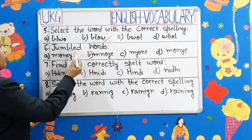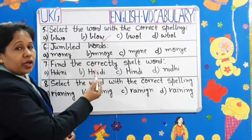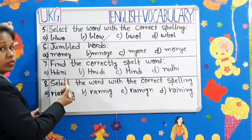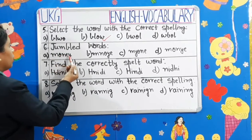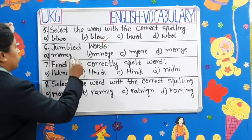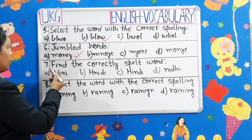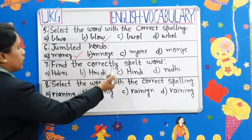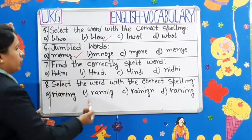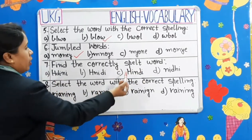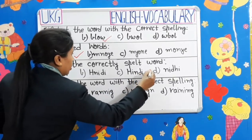Number 6: Jumbled words. Here, all the letters are jumbled, so we have to select the correct one — M-O-N-E-Y. Money. So, we will put a tick on it. Number 7: Find the correctly spelled word. Which word is correct, children? Yes — H-I-N-D-I. It sounds correct. Hindi.